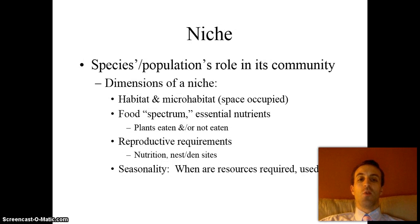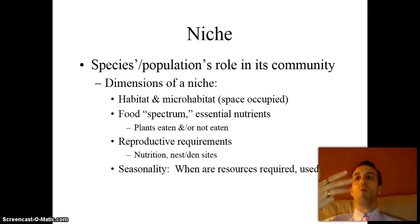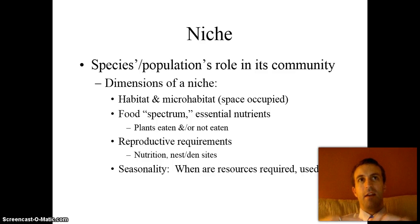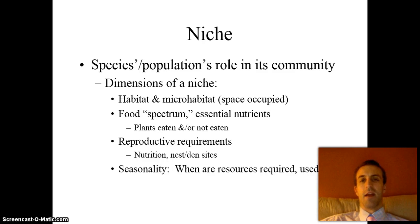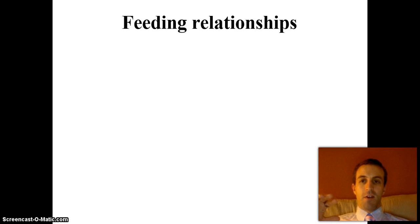A niche is the role that a species plays in its community: what kind of space does it occupy, what does it eat, what does it need to reproduce, when can you find it in this community? For example, 'I eat this, I live in this community from winter to fall, I need a lot of space to reproduce because I'm a big wolf' — that's the role the species plays.